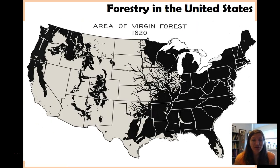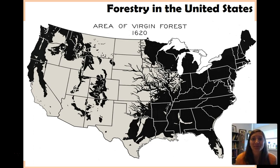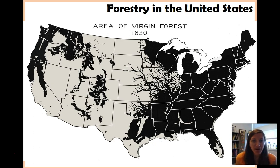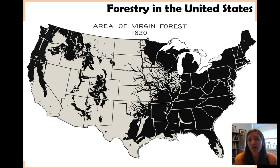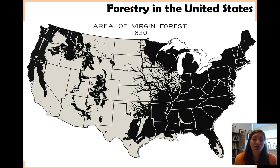This map is looking at forestry in the United States and trying to give you an idea of how much we have used our forest resources here. This is the map of 1620. Obviously in 1620 we did not have the entire United States mapped out, but looking at seed profiles, soil, and various inferences based on weather, this is our best estimate of what was forested in the United States around the time European colonists came over.